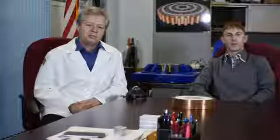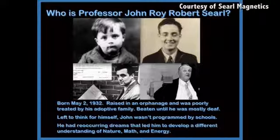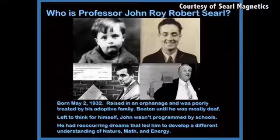Professor John Searle is a man who back in 1946, as a 14-year-old, was employed by British Rewind Electric Repairs Limited in London, England. And it's there at the electric company where Professor Searle was able to develop his ideas on magnetism to develop his electric generator called the SEG, or the Searle Effect Generator.